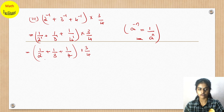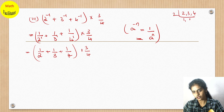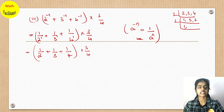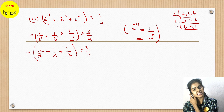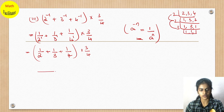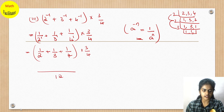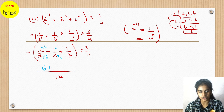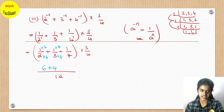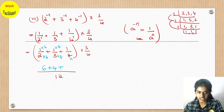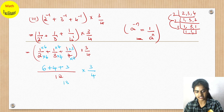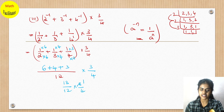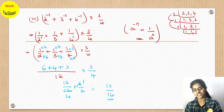Take LCM of 2, 3, and 4, which is 12. For 1 by 2: multiply by 6, giving 6 in the numerator. For 1 by 3: multiply by 4, giving 4 in the numerator. For 1 by 4: multiply by 3, giving 3 in the numerator. So we have 6 plus 4 plus 3 equals 13, giving 13 by 12. Then 13 by 12 into 3 by 4: 3 ones are 3, 4 fours are 16 — so the final answer is 13 by 16.